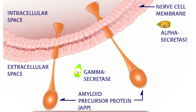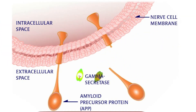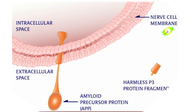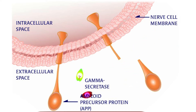If the first cut is just outside the cell membrane by an enzyme called alpha secretase, the plaque-causing beta amyloid fragment is not formed. But if APP is first cut a bit further away from the cell membrane by an enzyme called beta secretase, the beta amyloid fragment is formed.